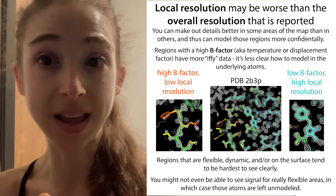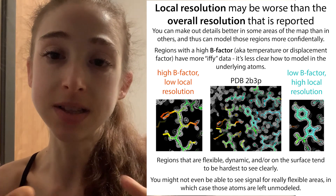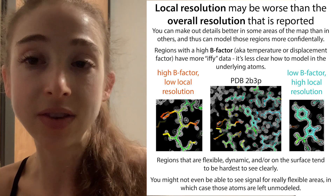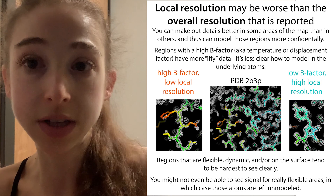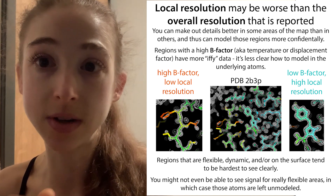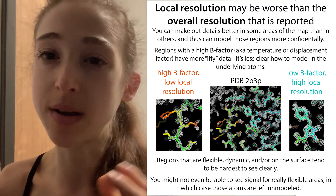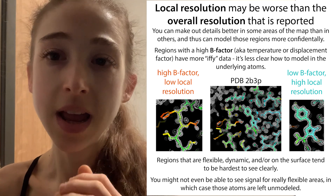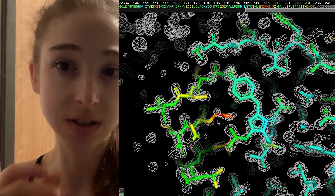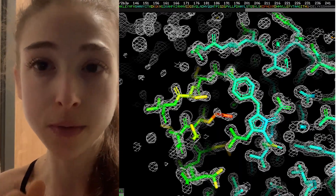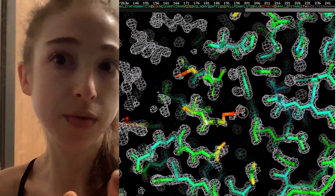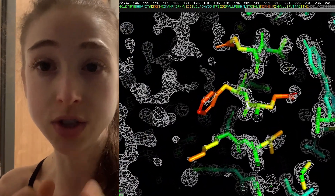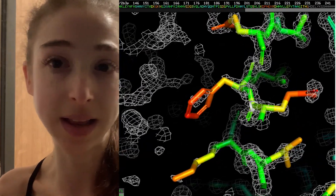The overall resolution might not match the local resolution. Regions buried inside a protein — stable, bound to other things — will have a really low B-factor, shown as dark blue when colored by B-factor. Meanwhile a flexible or dynamic region right next door might have a really high B-factor and would be colored red.